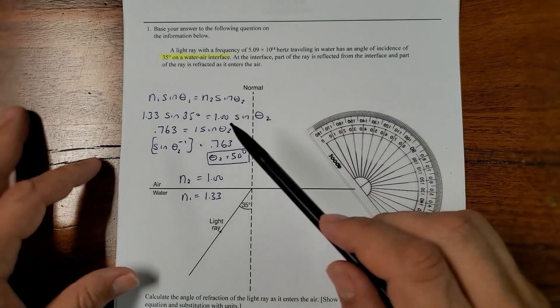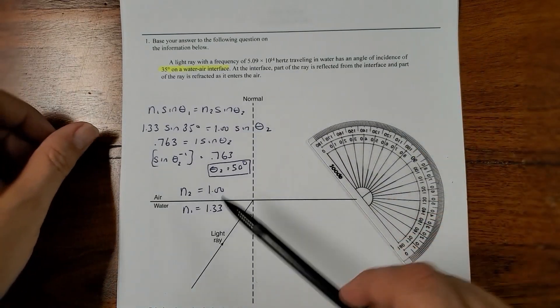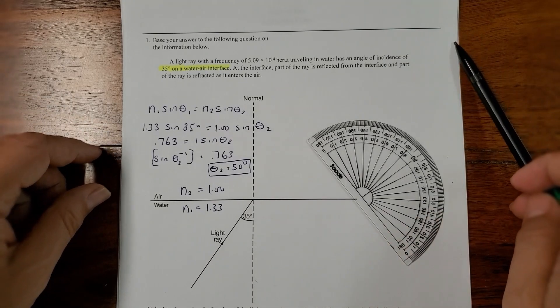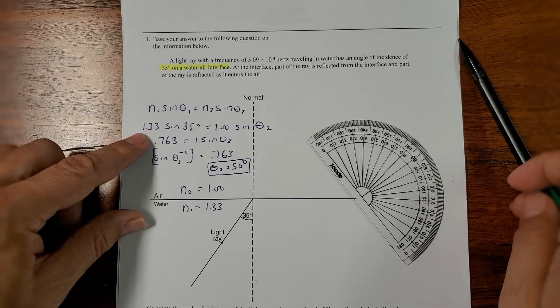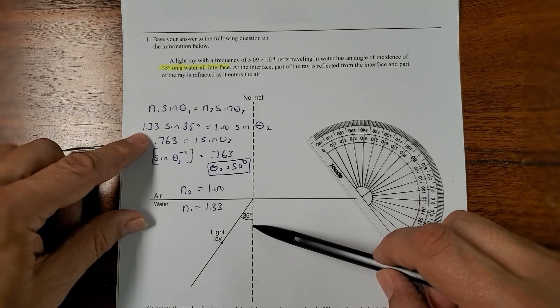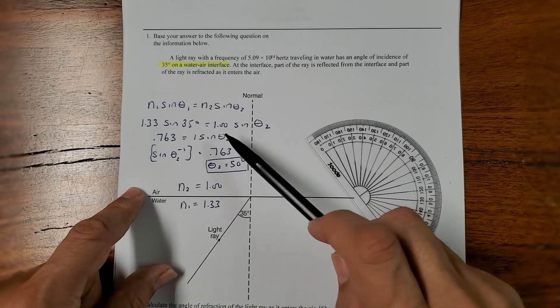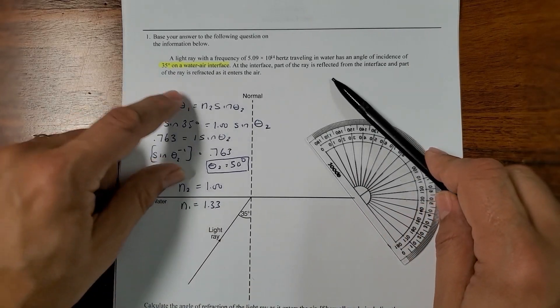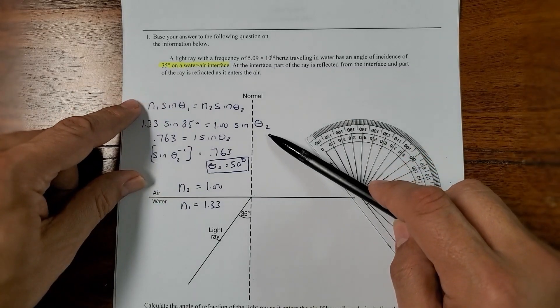So, what we have to do is use Snell's law. The first medium is water, and if you look up on our reference table, the index of refraction for water is 1.33. The first angle, theta 1, is 35 degrees, the bottom angle. The second medium is air, which has an index of refraction of 1. The second angle, we don't know.